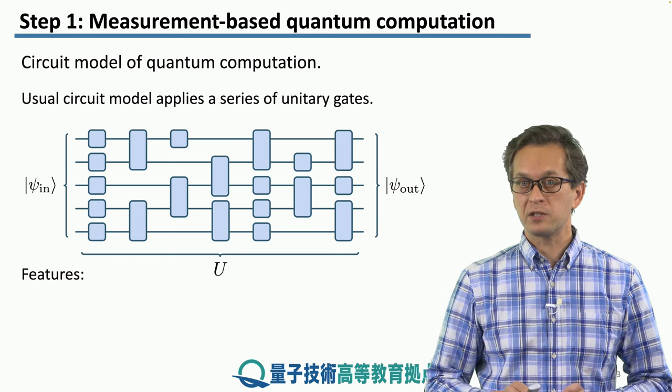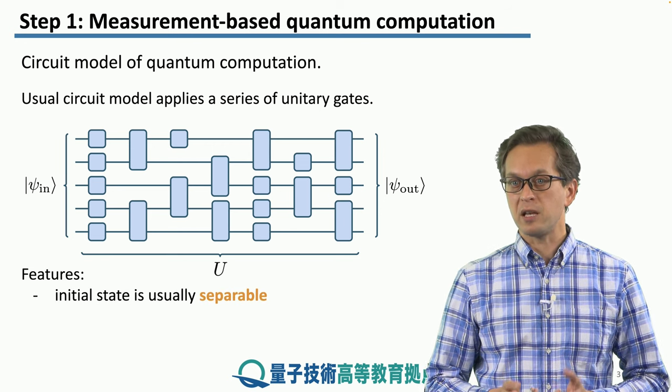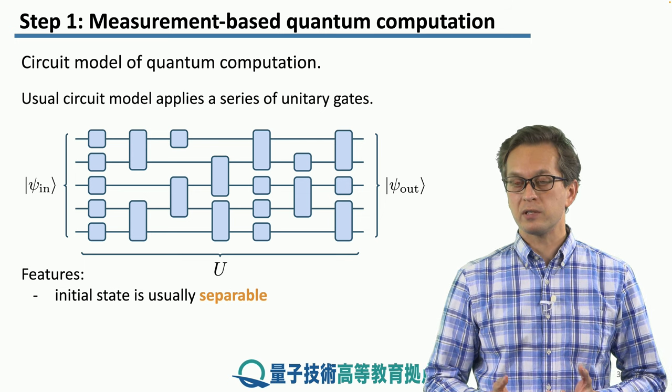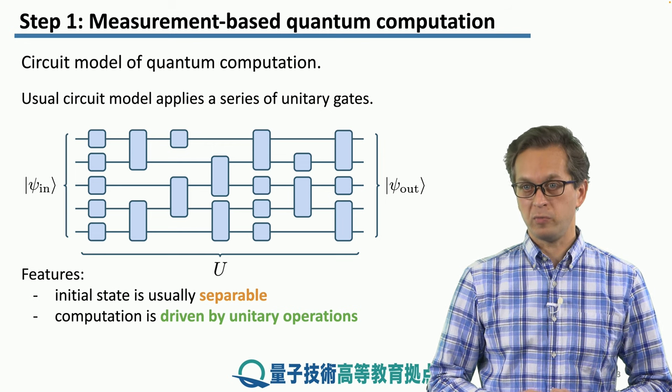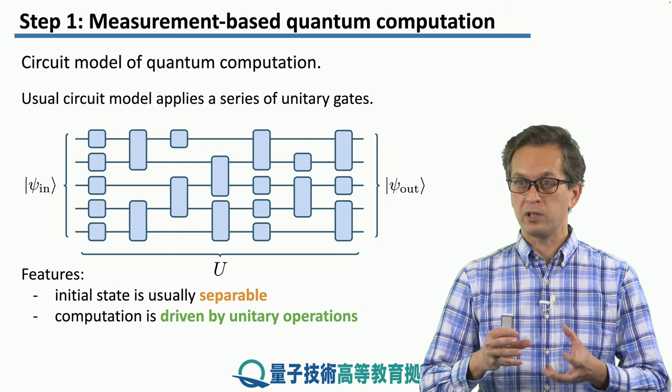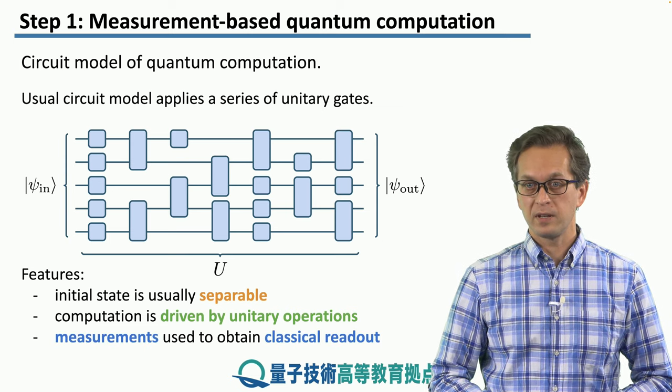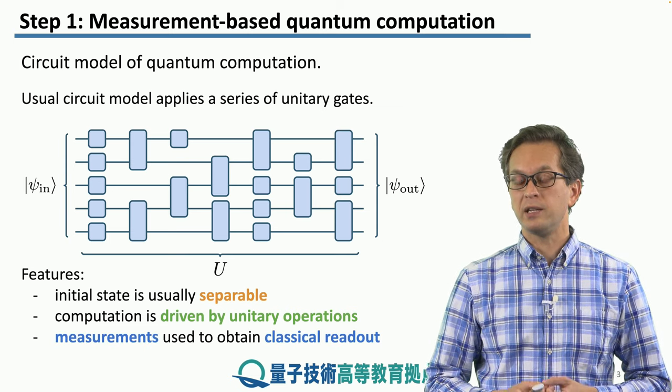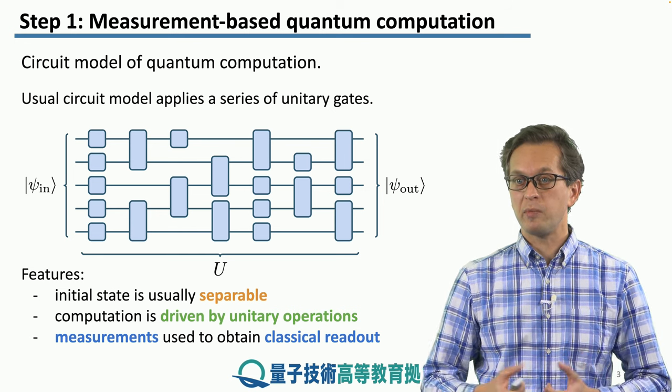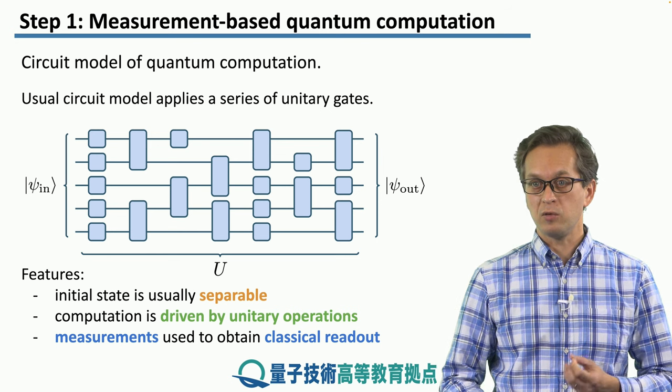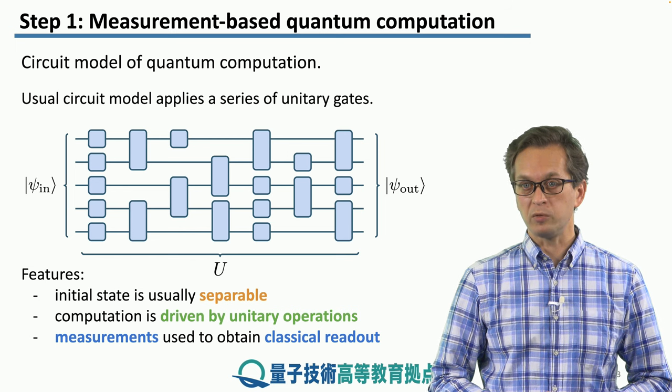Some of the features of the quantum circuit model are the following. Usually, the initial state is separable. For example, all the qubits are initialized in the state zero. And the computation is driven by unitary operations. We apply coherent manipulation to the qubits, and that's how we perform quantum computation. And measurements are used to obtain a classical readout at the end. Once we have our quantum state psi out, we can apply measurements in various bases to find out the classical bits, and that will tell us about the answer to our quantum computation.